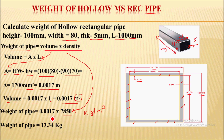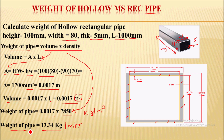After calculating, we get the weight of pipe which is 13.34 kg per meter length. In this way we can calculate the weight of hollow rectangular pipe. Hope you understand this video. Thank you for watching.